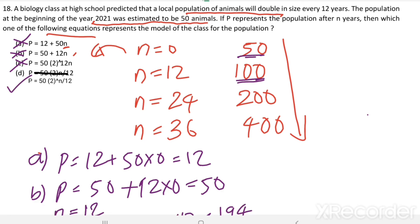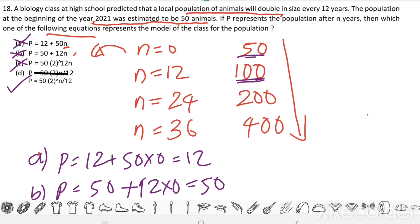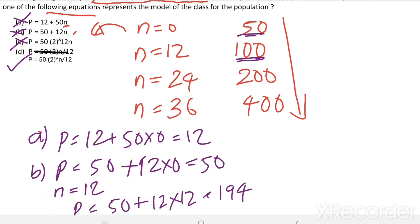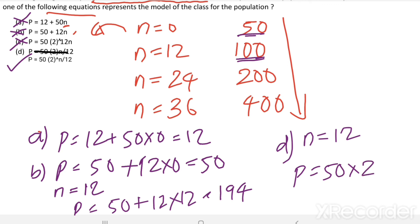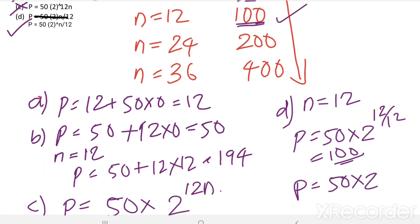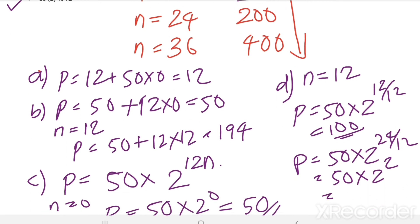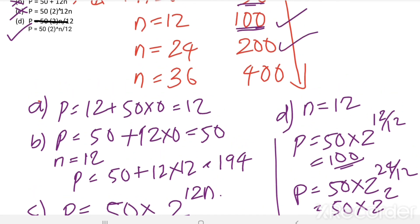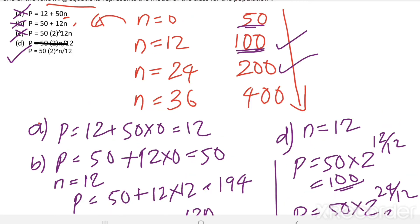So the answer will be option D: p equals 50 times 2 to the power of n divided by 12. Let us check: when n equals 12, p equals 50 times 2 to the power of 12 over 12 equals 50 times 2 equals 100 — correct. When n equals 24, p equals 50 times 2 squared equals 50 times 4 equals 200 — also correct. So the answer is option D: p equals 50 times 2 to the power of n over 12.